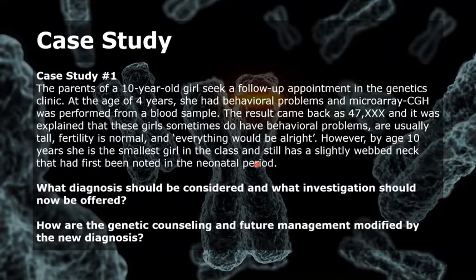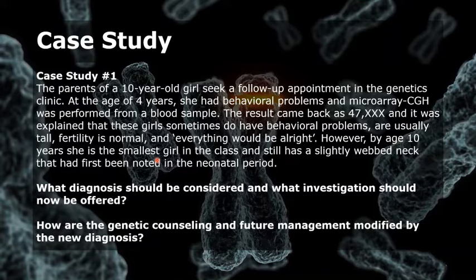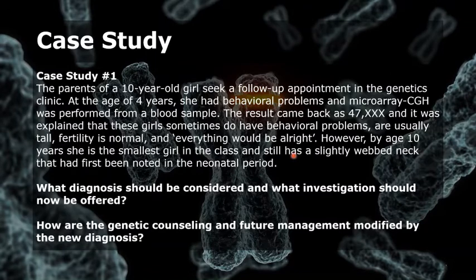The first question is: what diagnosis should be considered and what investigation should now be offered? The second is: how are genetic counseling and future management modified by the new diagnosis? Given the original result of 47 XXX but now showing short stature, this raises the possibility that she has chromosome mosaicism — she might be mosaic for Turner syndrome, especially given she is the smallest girl in class and has a slightly webbed neck.